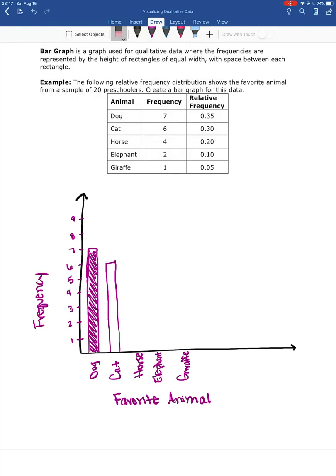Okay, and again I'm gonna go ahead and just kind of shade that in. And then horse had a frequency of four, so I'm gonna come up to four and then across. Again, the size of the rectangle, the thickness of the rectangle, should be about the same. Elephant was two, and giraffe was one. And that is our bar chart.